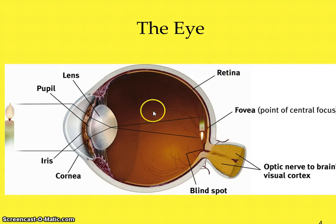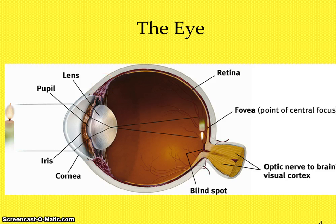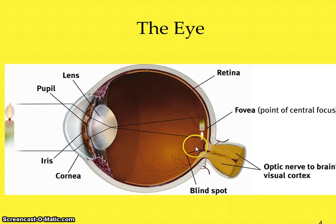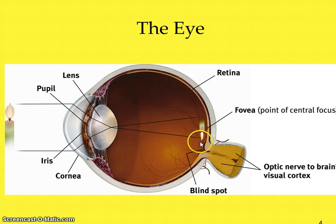Behind the pupil, as you see here, is the lens. The lens is responsible for helping to focus the image on the retina. The process of accommodation occurs, where the shape of the lens will actually change based on how close or how far away an object is. The lens literally projects the image onto the back of the retina, and as you can see, the image of this candle is projected upside down — your brain is what flips that image right side up.